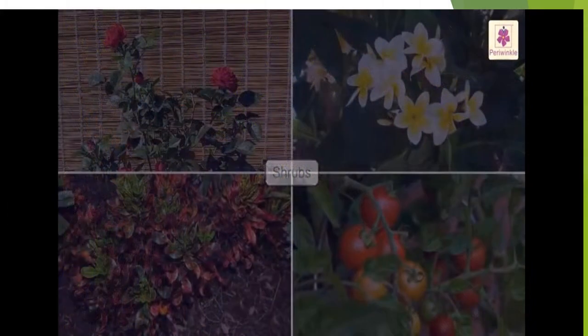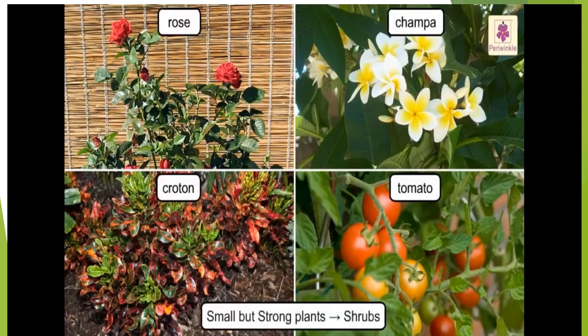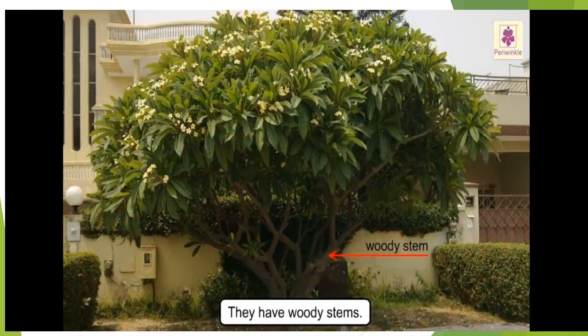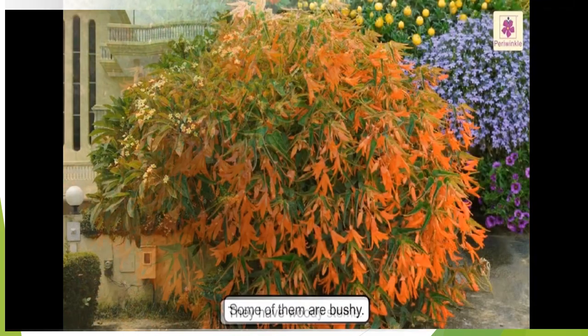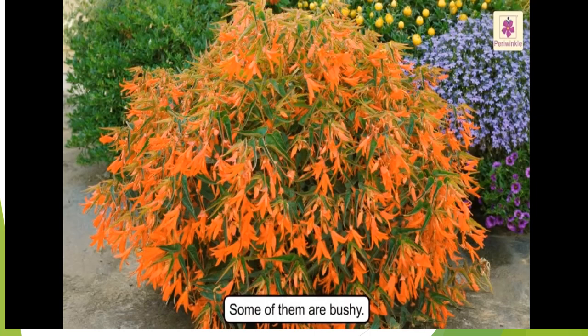The next one is shrubs. Shrubs are small but strong plants — for example, rose, champa, croton, tomato, etc. As you can see in the picture, shrubs have woody stems. Some shrubs are bushy, and they live for a few years.